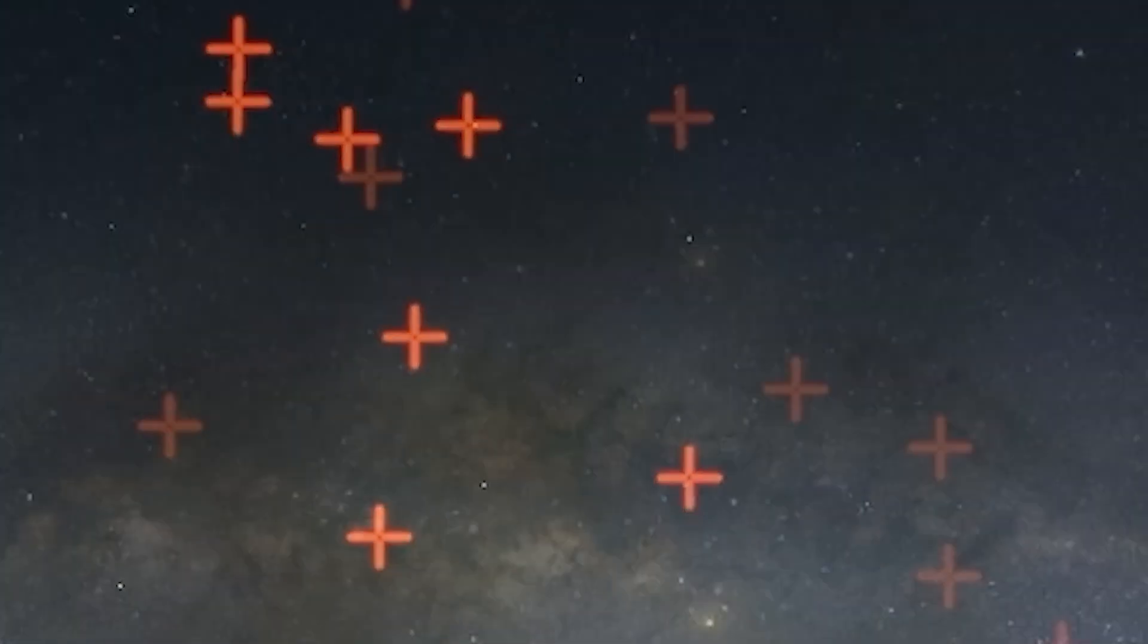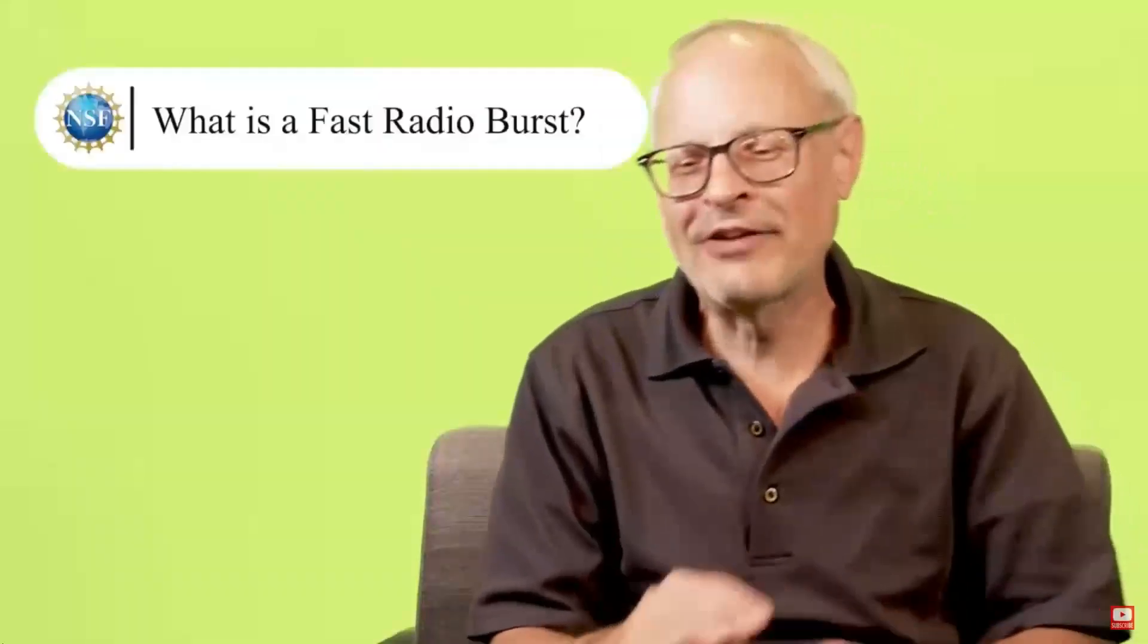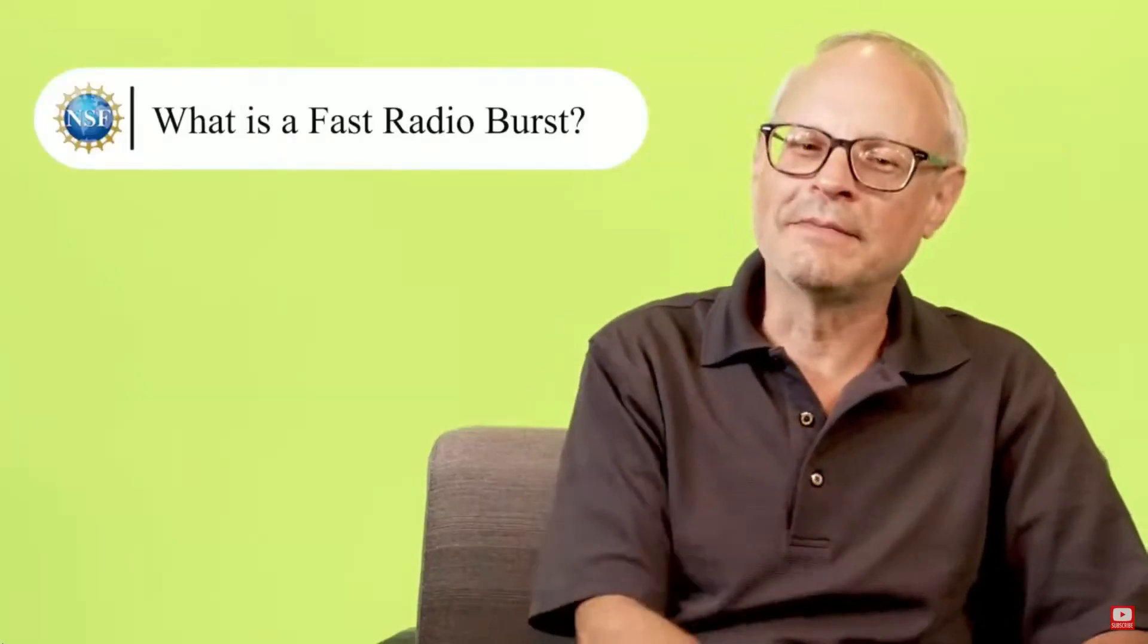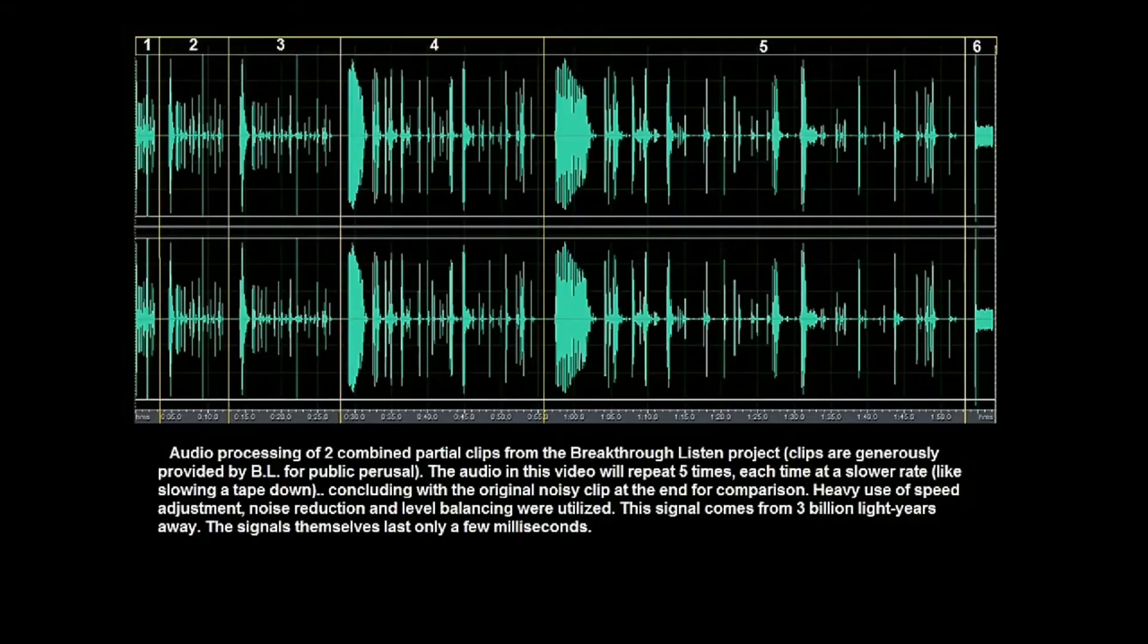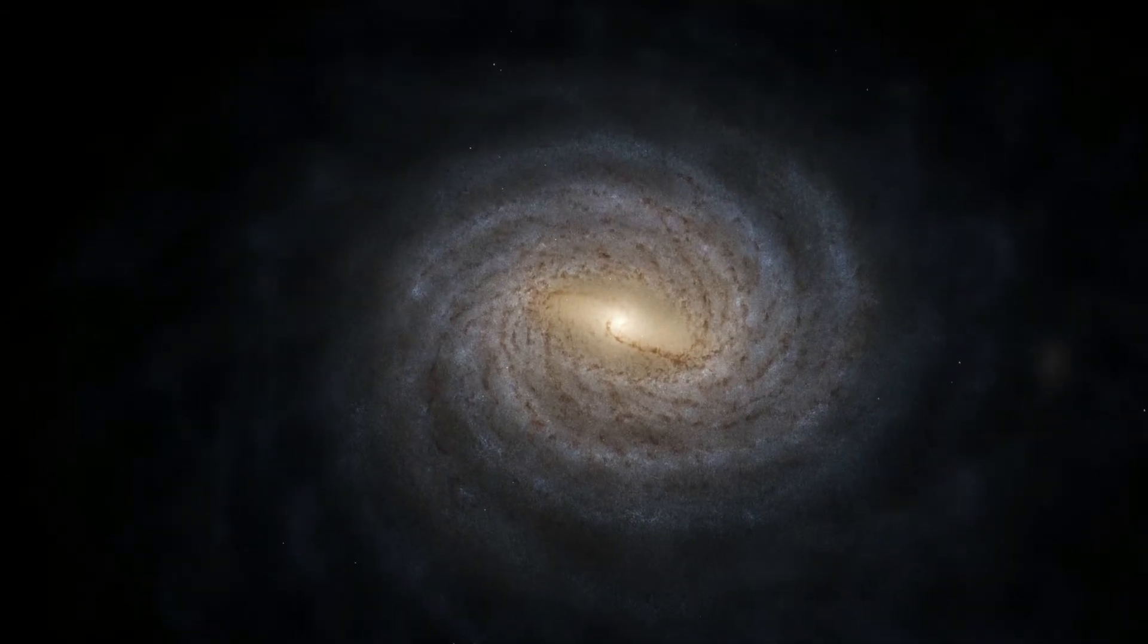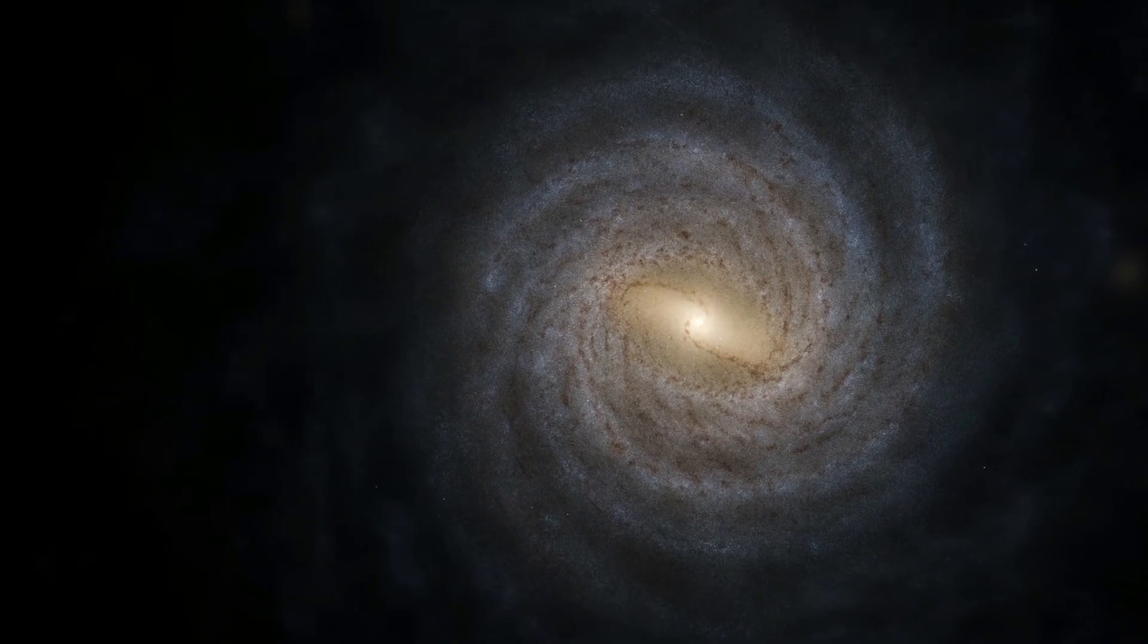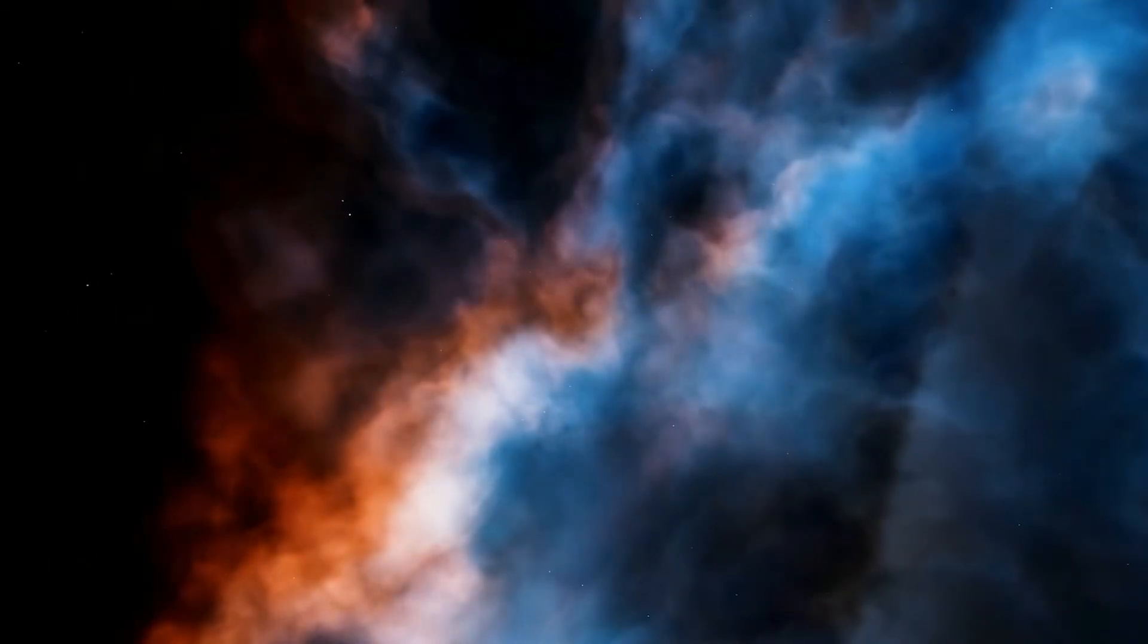Some FRBs blast once and vanish forever. Others repeat regularly, like clockwork, baffling scientists. Some seem to cluster in strange locations, like the outskirts of galaxies or even inside globular clusters. Here's the mind-bender: one repeating FRB seems to flare every 16 days, almost like it's on a timer. Another was detected coming from inside the Milky Way, traced back to a magnetar, giving the first solid clue to their origins.